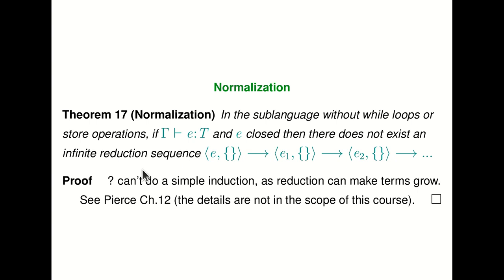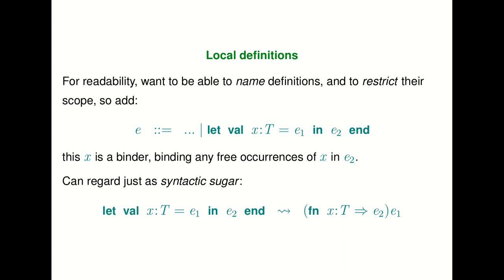One property which holds for certain typed lambda calculi is normalization. If you removed while loops and store operations from this language, then for any closed term, there's no infinite reduction sequence — it will always reduce to a closed value. If you try to prove this by induction, you'll get stuck; if you're curious, see chapter 12 of the Pierce book or take type systems next year. We've now introduced basic functions to this programming language, but in the next lecture we're going to look at how to implement recursive definitions — so far we've just added basic lambdas without self-referential or recursive functions. See you then.